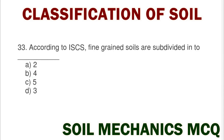Next question: according to the Indian standard classification system, fine grained soils are subdivided into option A 2, option B 4, option C 5, option D 3. The correct answer is option D 3.